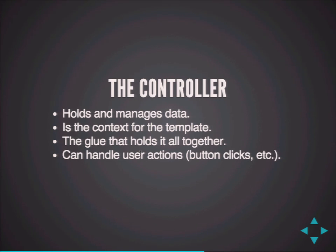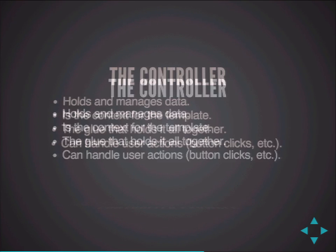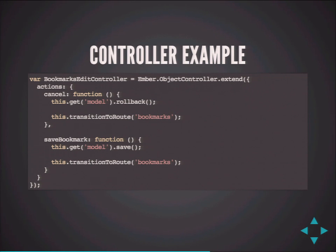The controller object is concerned with what data do we have on this page and what actions can we take on that data. The controller is what you can access from your templates — it's like the context you get in Drupal 8 templates. When the route sends some data along to the controller — in this case, our bookmark data — then that bookmark will be available through the controller in the template. Like the route, it can also handle user events.